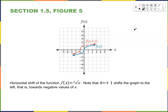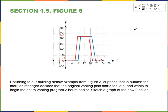For the cube root function f of x, the blue graph, we shift it to the left — that is f of x plus 1 — towards the negative values of x. Using the same figure 3, suppose in autumn the facilities manager wants to begin the venting program two hours earlier. That gives us v of t plus 2, which shifts the graph to the left by two hours.